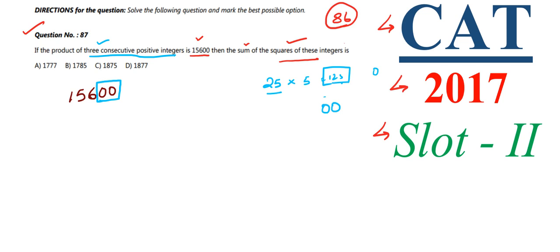So the possible sets of three consecutive integers containing 25 are: {24, 25, 26}, {25, 26, 27}, or {23, 24, 25}. We need to determine which of these three sets has a product of 15,600. Let's solve this in a simpler way.